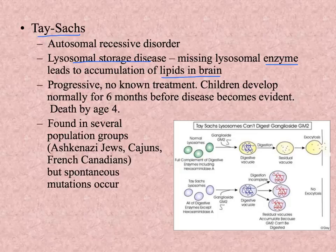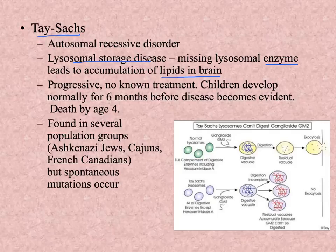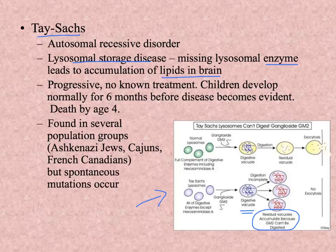Children typically develop signs of Tay-Sachs at about six months of age, and it slowly progresses, becoming worse and worse, until the child dies, usually between their third and fourth birthday. There are several population groups much more likely to have Tay-Sachs, but it can occur spontaneously. The diagram here shows that without the digestive proteins in the lysosome, material accumulates in storage compartments throughout the cell, interfering with the cell's processes and eventually causing death.